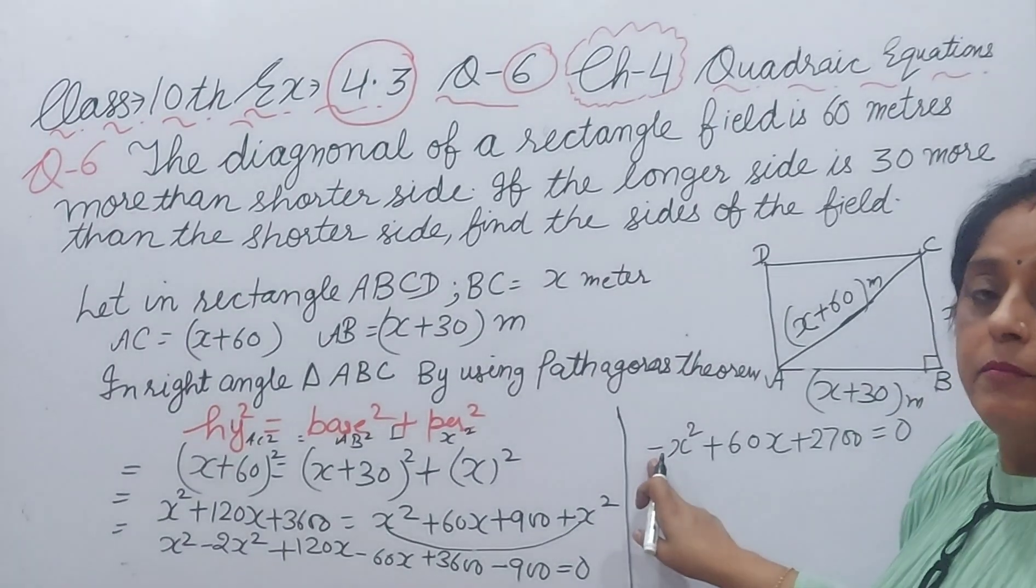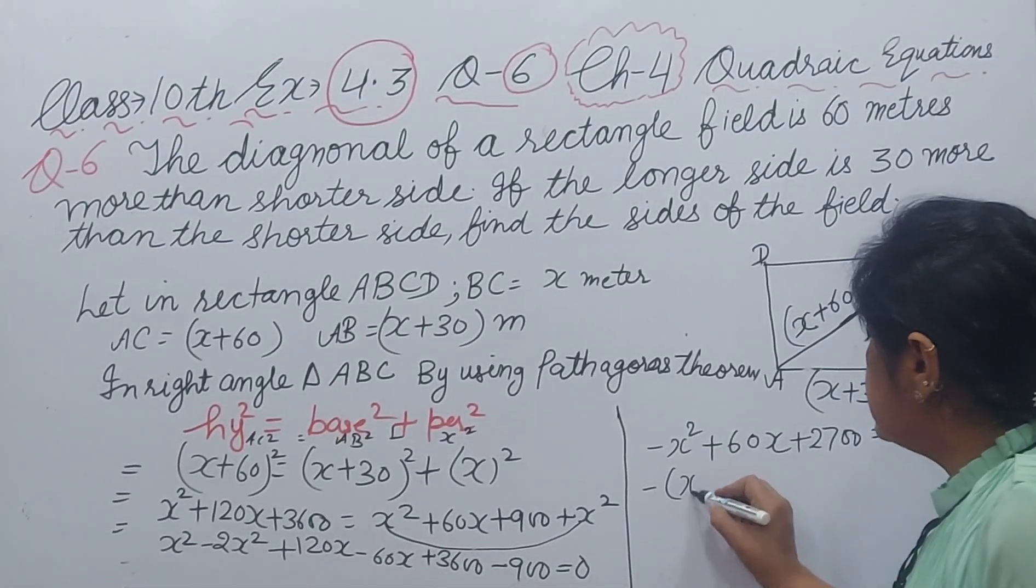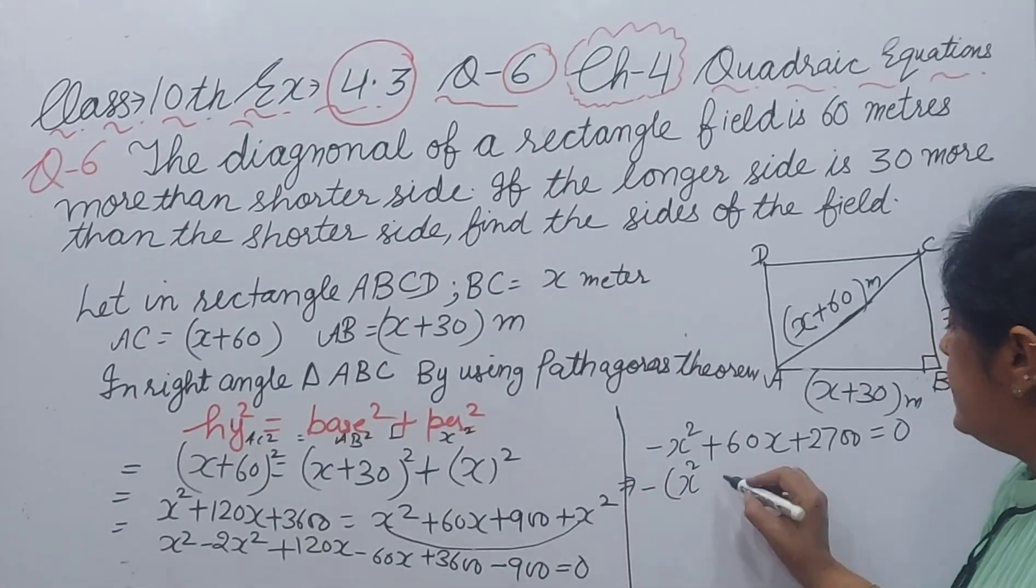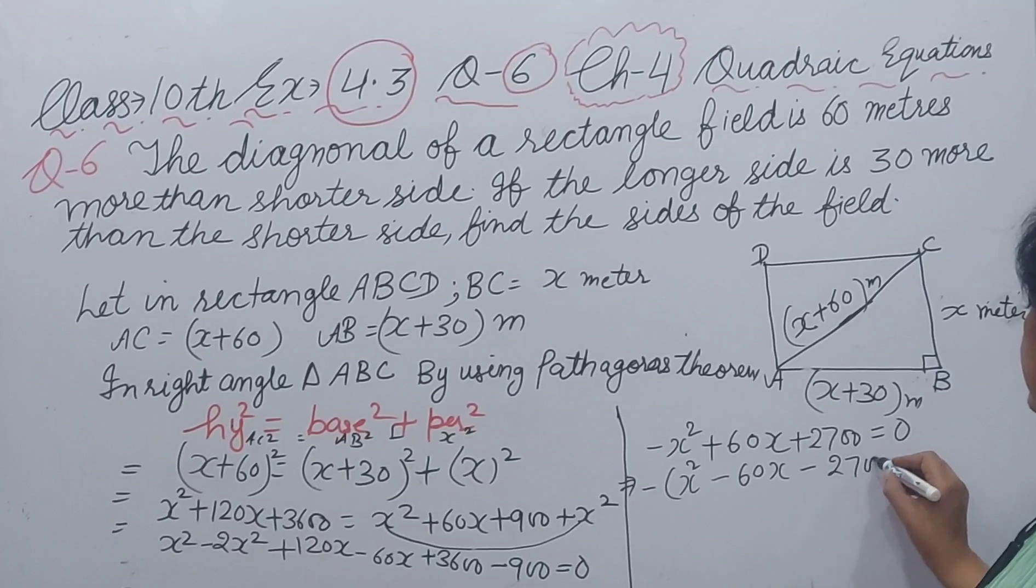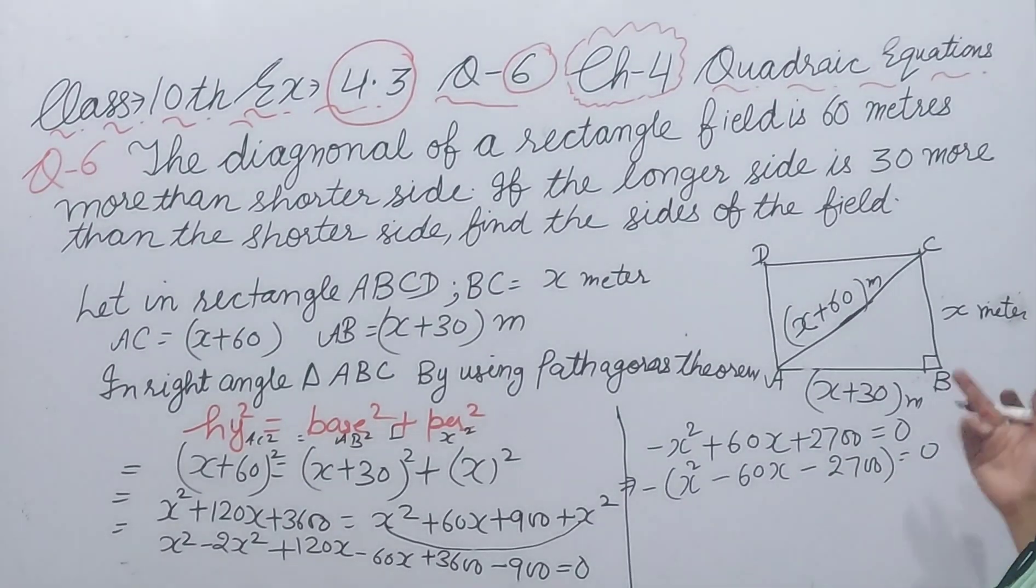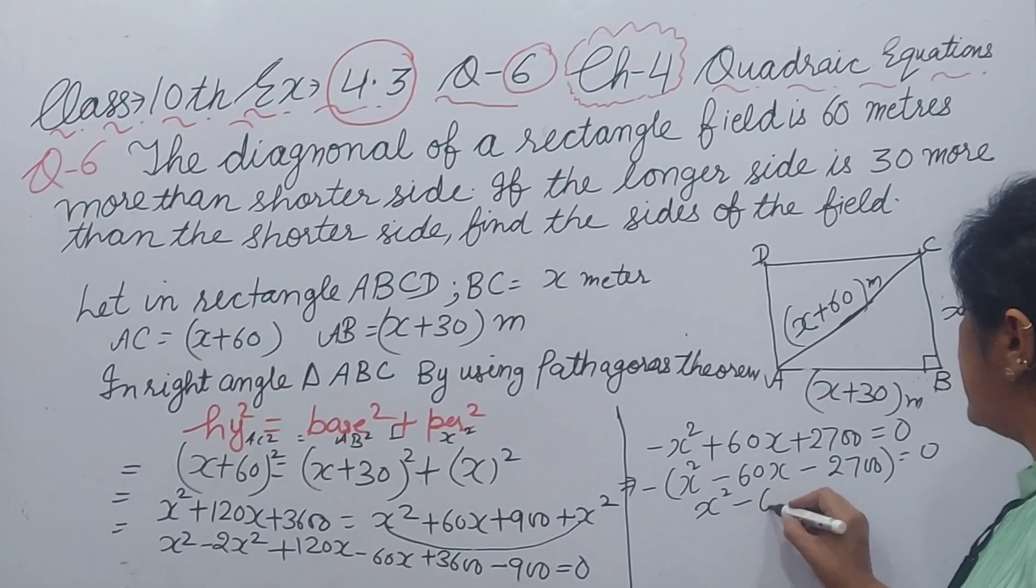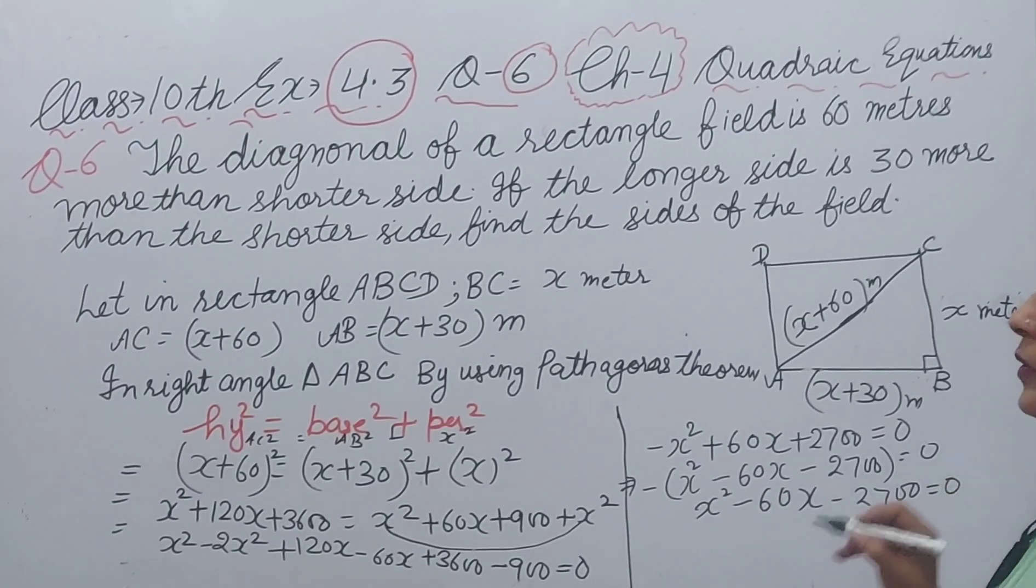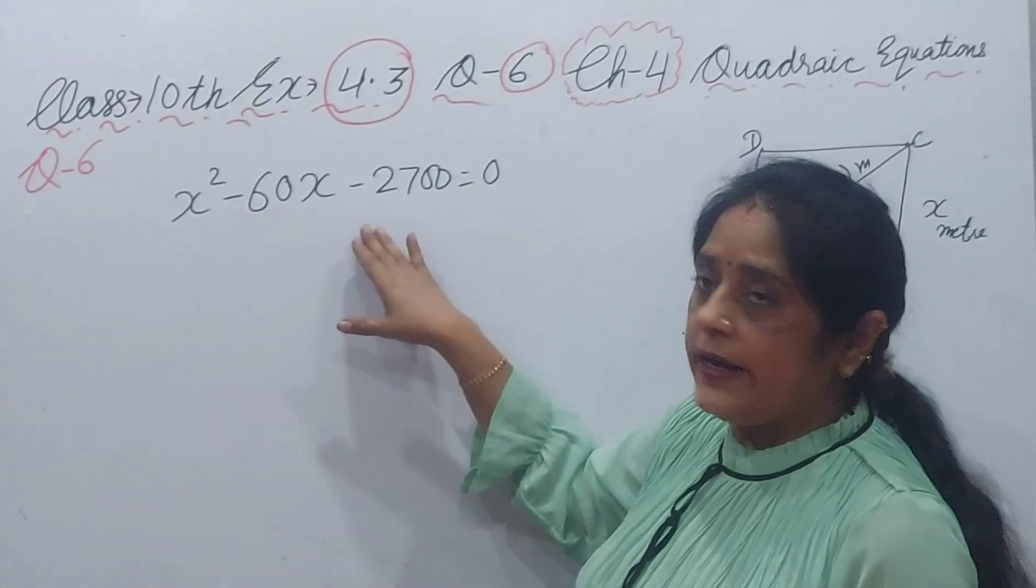Now, I am taking minus as a common, because our X square is minus. X square will be plus, because we have taken minus outside, and this will be minus 60X, and minus 2700 equal to zero. This minus divided by zero, it will be finished. And we can write X square minus 60X minus 2700 equal to zero. Yes, I have rubbed. Now, I have written the quadratic equation here.